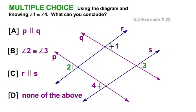Well, here is a very interesting diagram. The only givens we have that angles 1 and 4 are congruent. Now, I can see a problem right away. They're not corresponding. They're not alternate interior, alternate exterior, or consecutive interior angles.